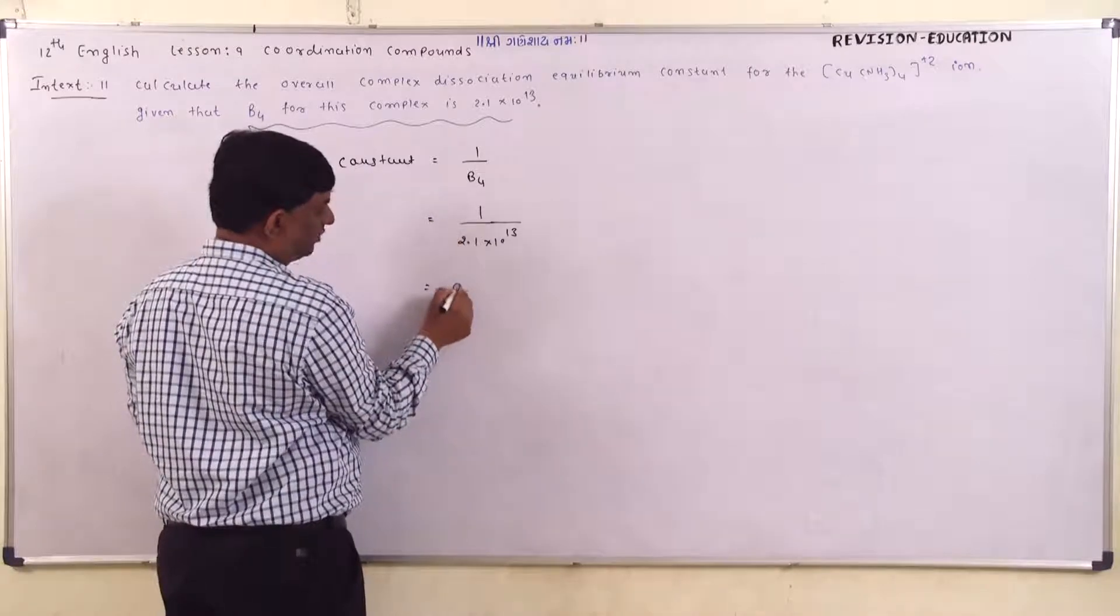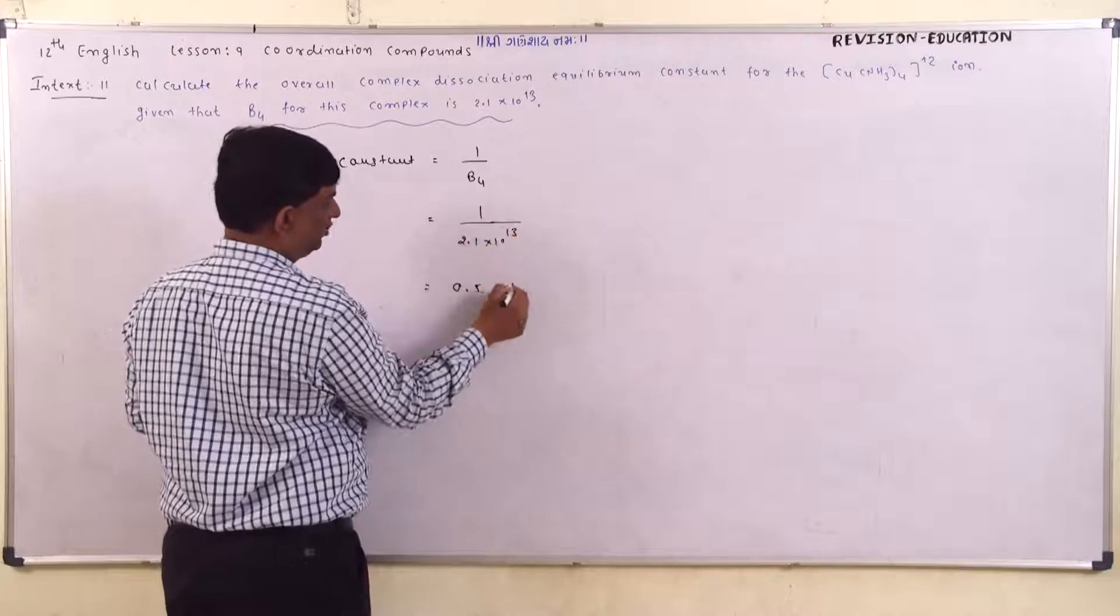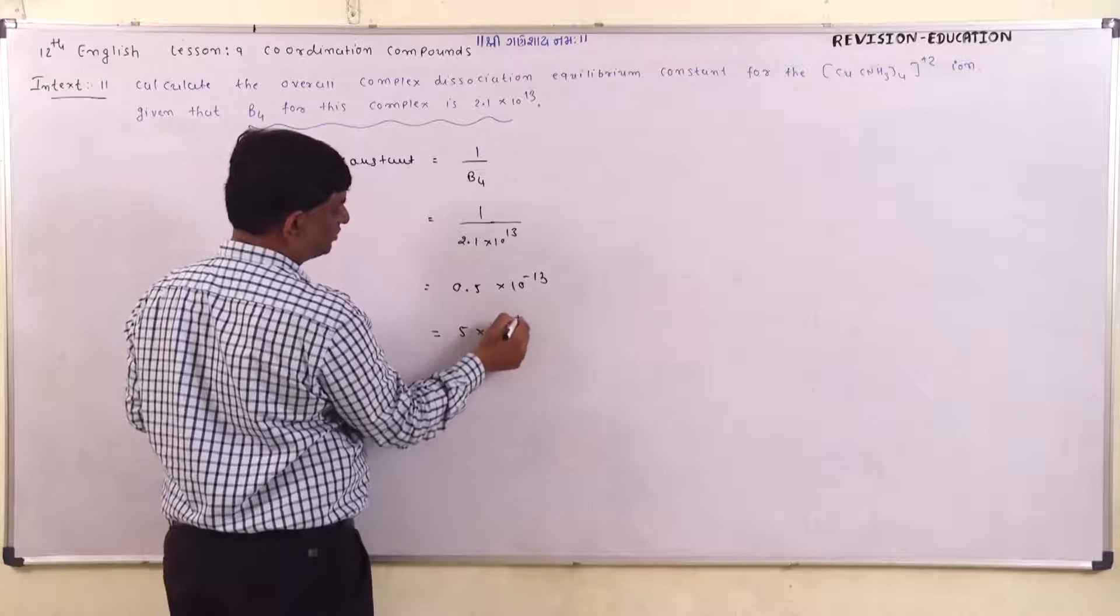One divided by two is approximately 0.5, so this gives us about 0.5 × 10⁻¹³, which simplifies to 5 × 10⁻¹⁴.